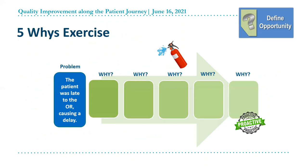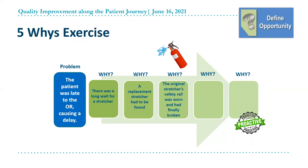Our first tool is called the Five Whys exercise. You simply pick a problem and start asking why — often a minimum of five or more times — until you reach what is really at the core or root cause. For example: the patient was late to the OR causing a delay. Why? Long wait for a stretcher. Why? A replacement had to be found. Why? The original stretcher's safety rail was worn and broken. Why? It had not been regularly checked for wear. Why? There was no equipment maintenance schedule. If you had stopped at the first three whys, your solution would have been to purchase more stretchers — but the root cause was a need to establish a maintenance schedule.